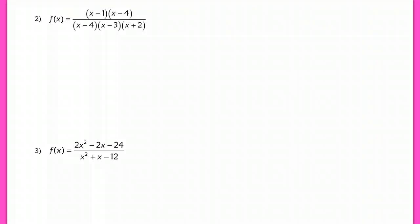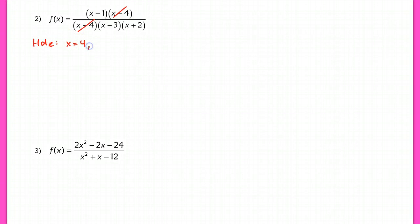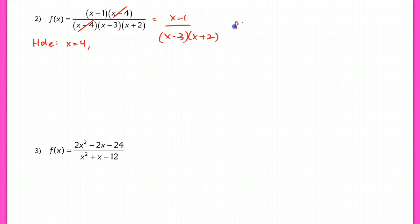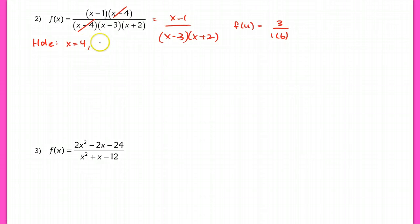Looking at problem 2, we end up seeing a hole. It's already factored for us. I want to make sure I'm explicit about this hole and find the coordinates. I plug x = 4 back into the resulting simplified function — make sure you don't plug it back into the original. So f of 4 equals 3 over 1 times 3, which gives 1/2. So the hole is at (4, 1/2).